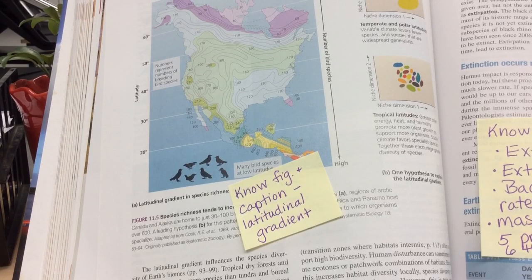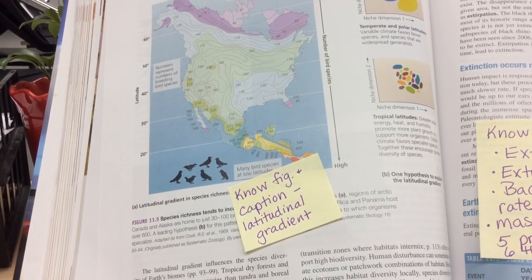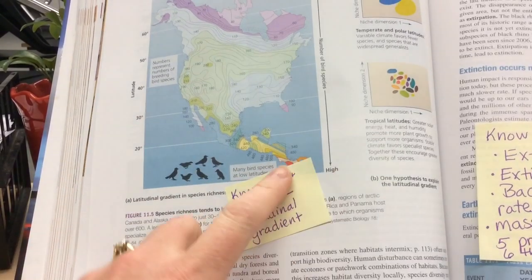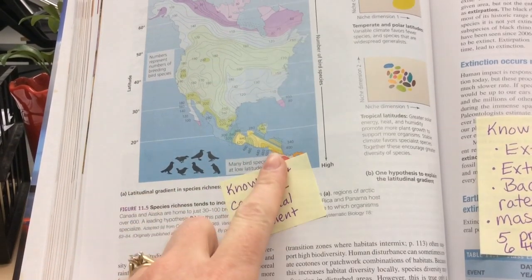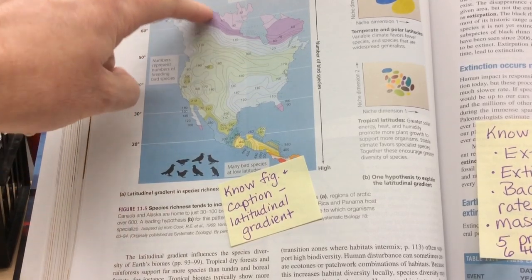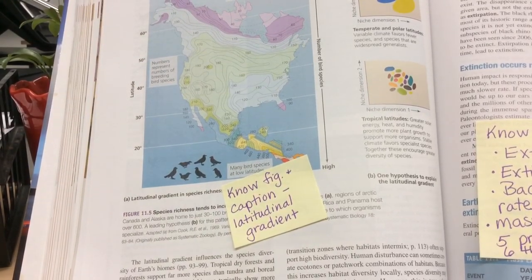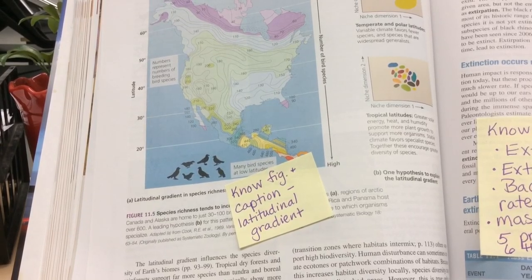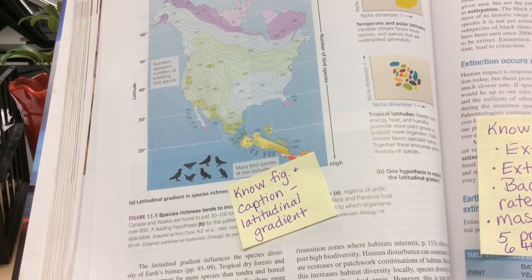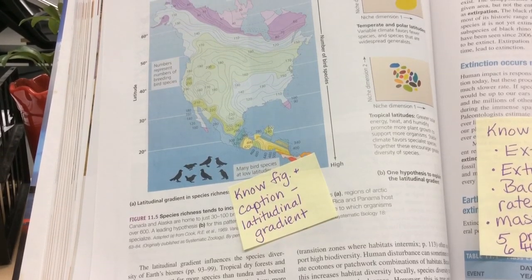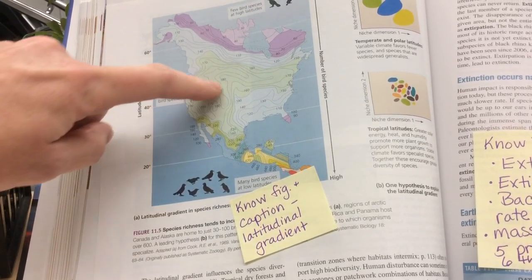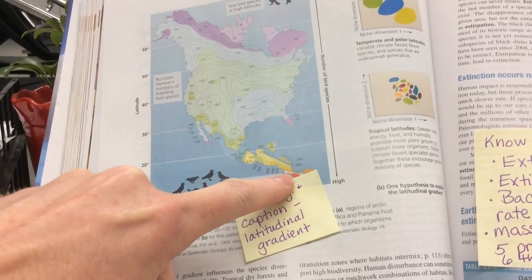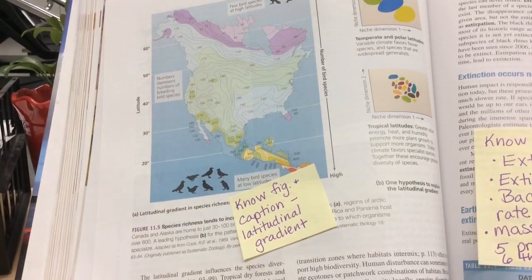Page 280. Make sure you know this caption and figure about latitudinal gradient. Latitudinal gradient basically refers to the fact that as you're close to the equator, which has more moisture and hotter temperatures, you have more species. As you go closer to the poles, you get fewer and fewer different kinds of species. This doesn't mean fewer animals and plants — it just means fewer different kinds, which is your biodiversity. There are some exceptions and biodiversity hotspots, but the general trend is that biodiversity decreases from the equator to the poles.